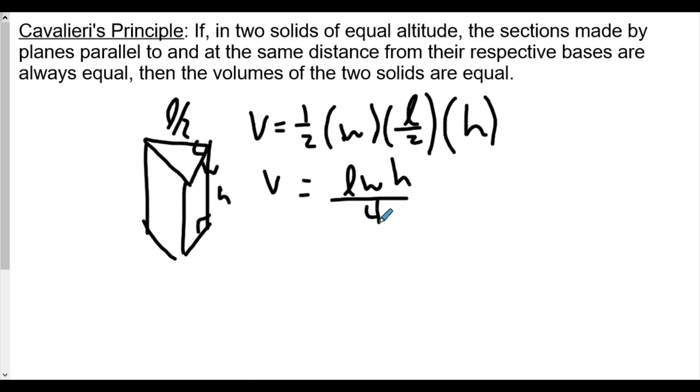But we were told that in this situation that we have L over 2 as measurement here, and this is the width, a right angle, but this is now slanted, right? So slanted, but this is also the width, and this is L over 2, and a right angle, and that the perpendicular height is still H.